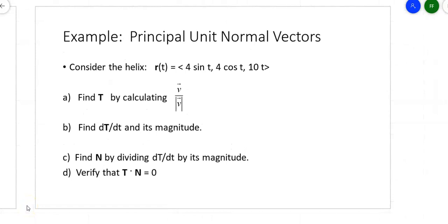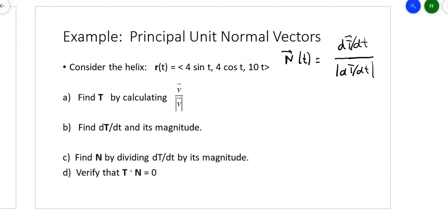Principal unit normal vectors. What is a principal unit normal vector? It gives us the direction of the curve. If the curvature gives us the bend — how much it changes without regard to direction — the principal unit normal vector gives us the sort of direction of that bend. The formula is dT/dt over the magnitude of dT/dt. You find the tangent vector, then its derivative, then divide by its magnitude. The dot product of the tangent vector and the normal vector should give zero.